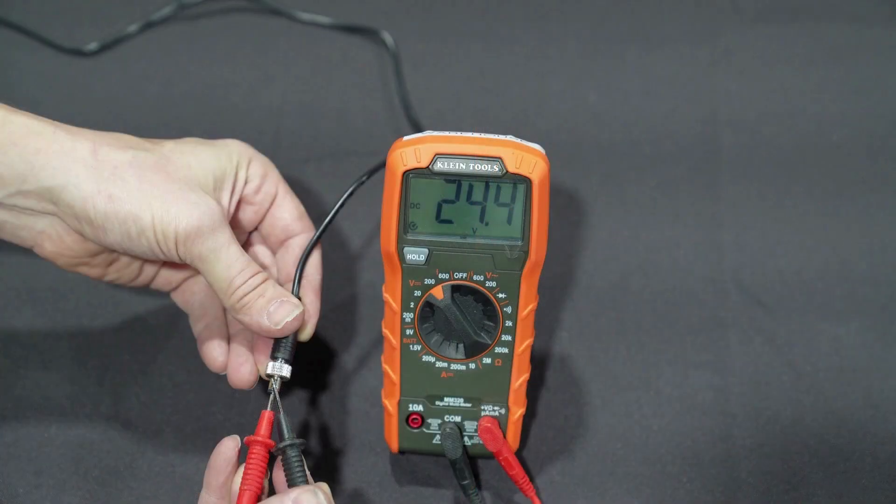The multimeter displays correct polarity and voltage, 24 volts give or take 0.4, indicating a good splice.